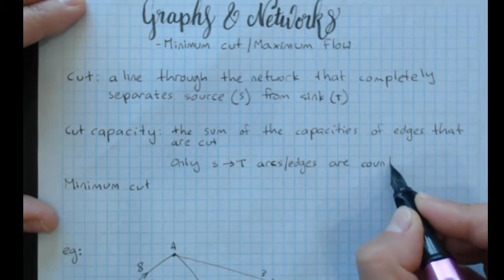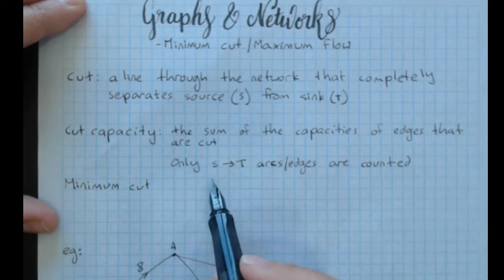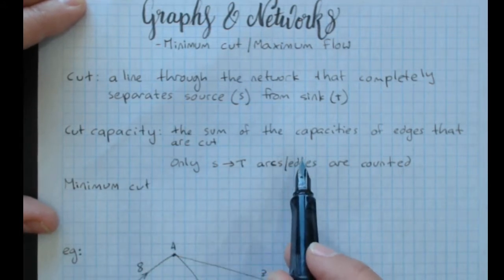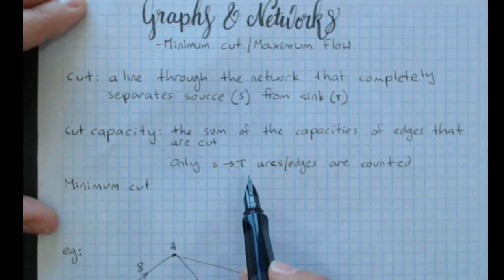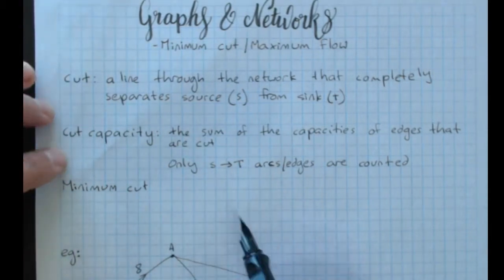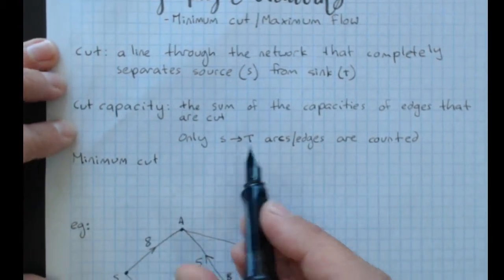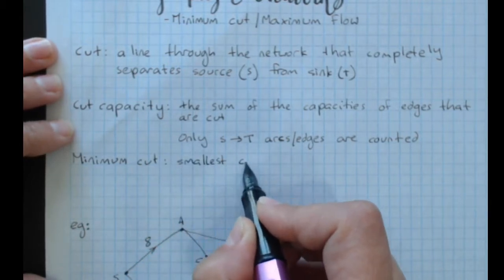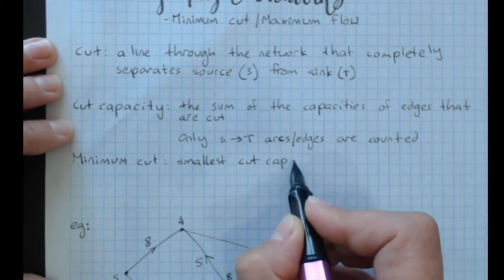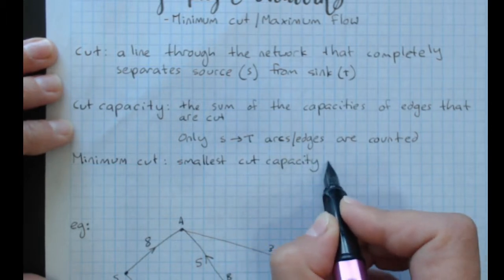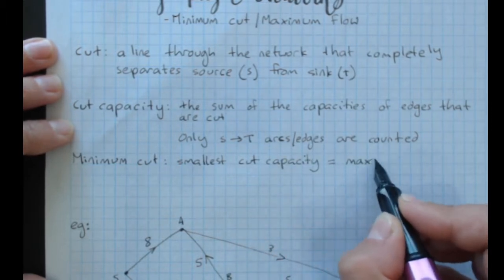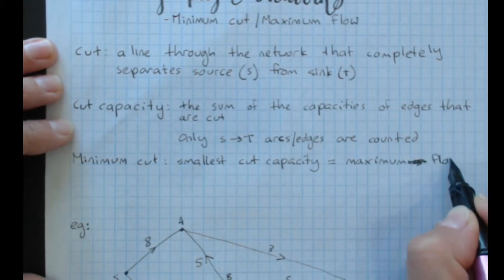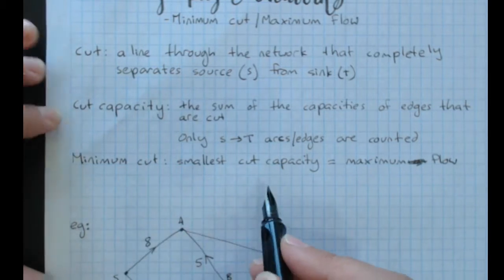Only arcs or edges that flow from the source side to the sink side are counted. We'll show you what that means when we get to our example. The minimum cut is equal to the maximum flow that can go through the system. Minimum cut equals maximum flow.